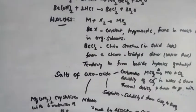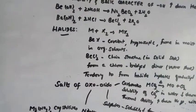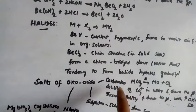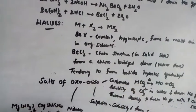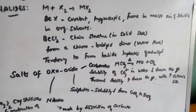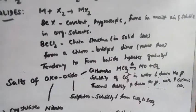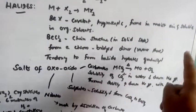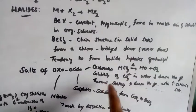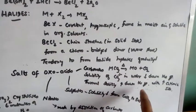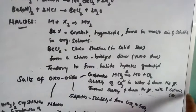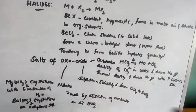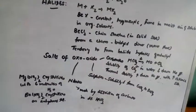Now let us see salts of oxo acids. First, carbonates: for example, calcium carbonate on heating gives calcium oxide and carbon dioxide. The solubility of carbonate in water decreases down the group, while thermal stability increases down the group. Why? With increasing cationic size, thermal stability also increases.